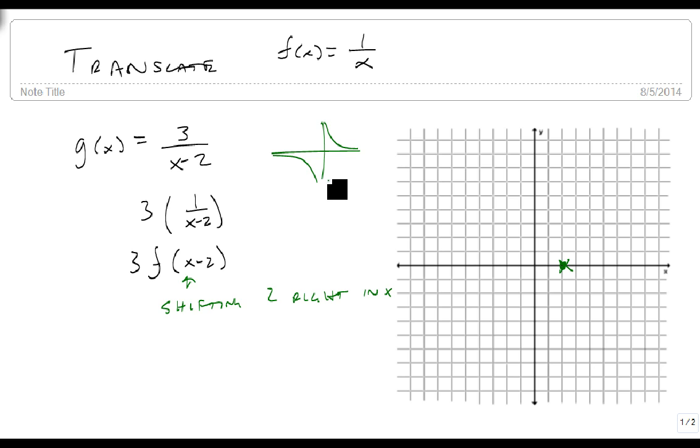But now we've taken that graph and we've shifted it. And then once we've shifted it, we're going to multiply everything by 3. So the normal graph, we have our vertical asymptote here. We're going to have a horizontal asymptote. Let's make it a little bit easier to see across here.